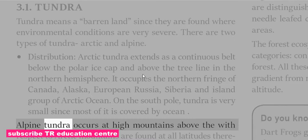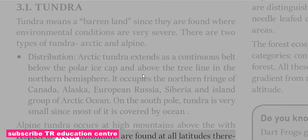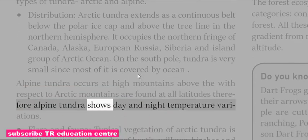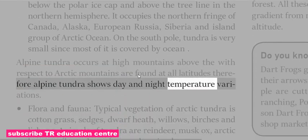Alpine Tundra occurs at high mountains above the treeline. Unlike Arctic, mountains are found at all latitudes. Therefore, Alpine Tundra shows day and night temperature variations.